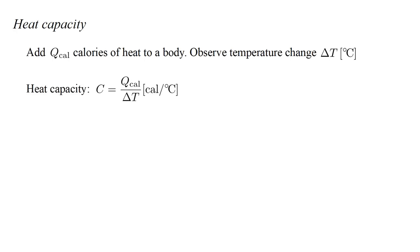Then the body's heat capacity, denoted by capital C, is the ratio of Q to delta T, with units of calories per degree Celsius.